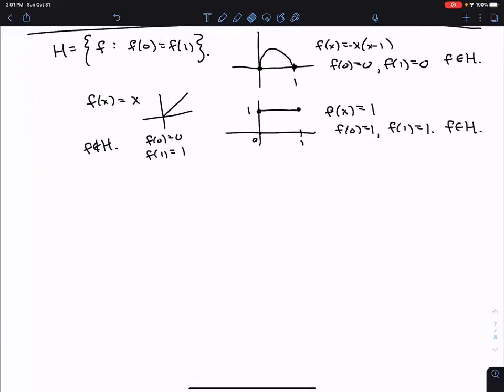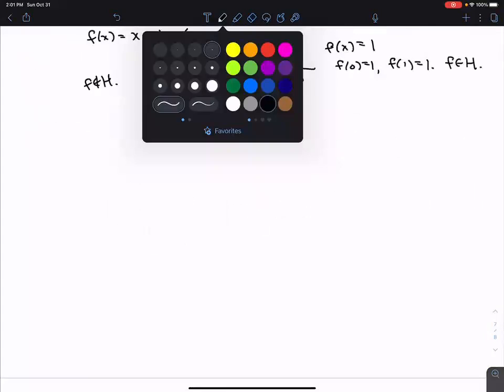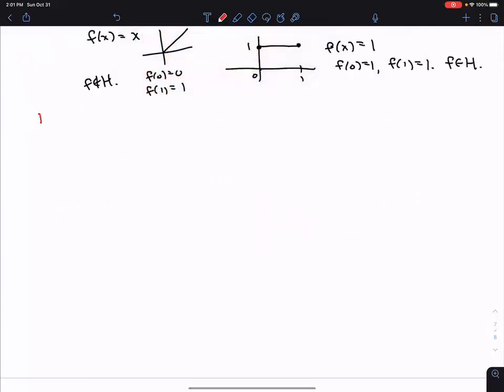So we need to show that this is a subspace. So to show something as a subspace, let's just do this in a different color to really highlight. To show H is a subspace, we need to do three things.